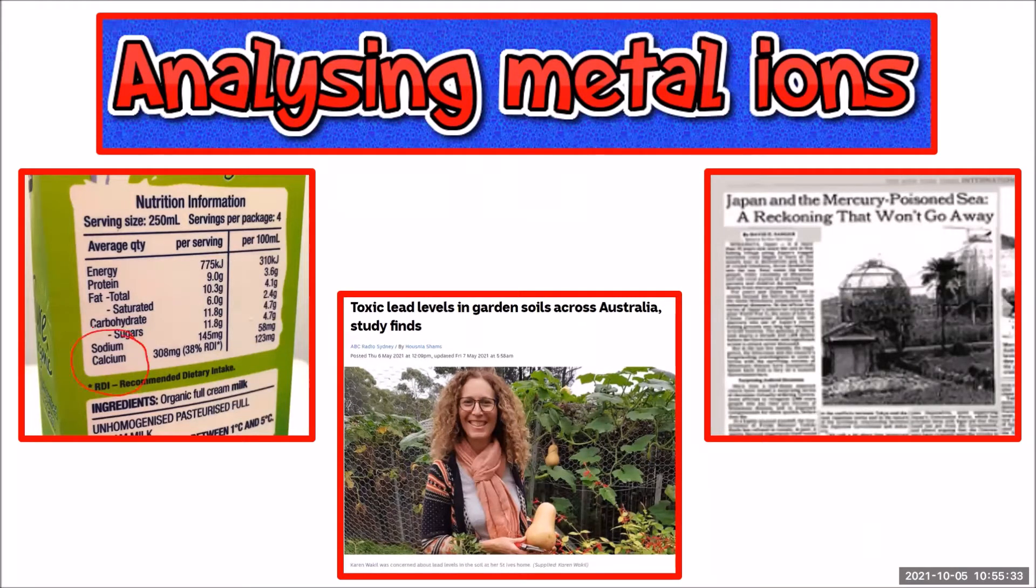Here we can see on a carton of milk that we have a readout of how many milligrams of sodium and calcium are present per 100 mils of the milk. That would have been determined with atomic absorption spectroscopy. It's a quantitative technique, so it provides information about how much of a particular metal ion is present in the sample.